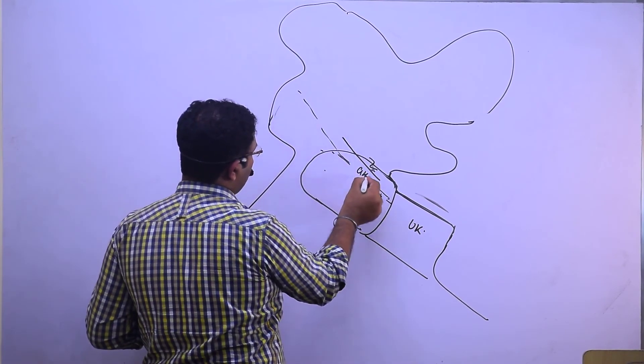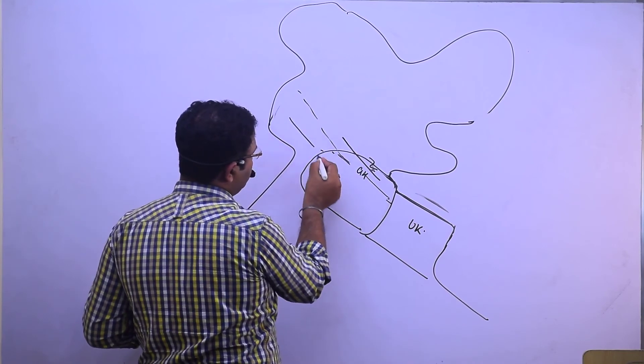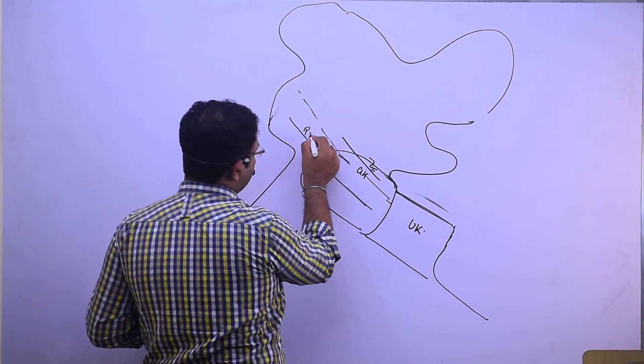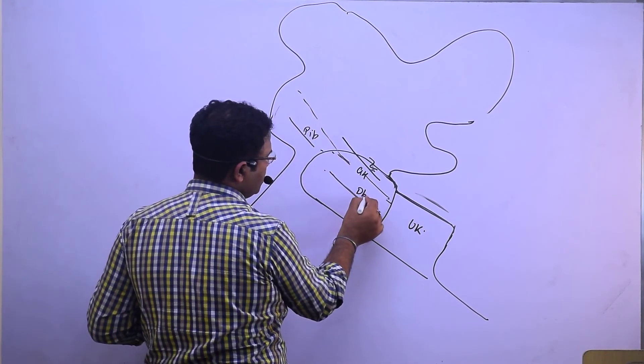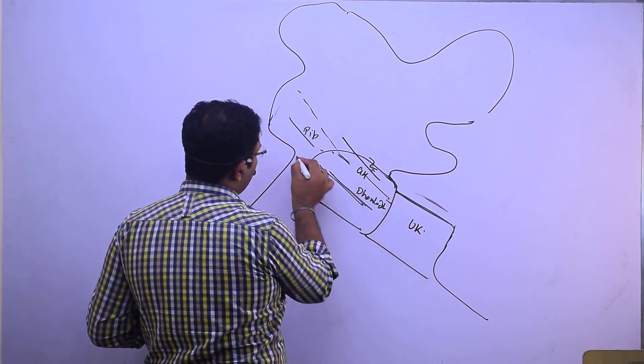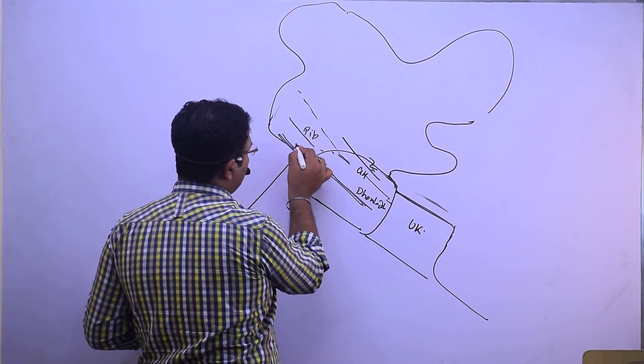Great Himalaya, Middle Himalaya is Pir Panjal, and here it is Dhauladhar, and here it is known as Jammu Hills.